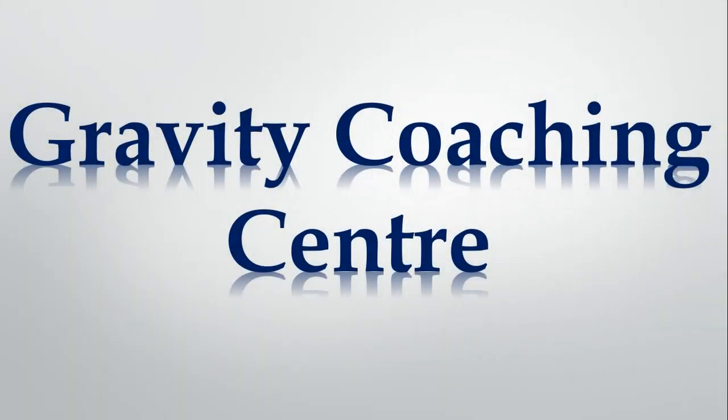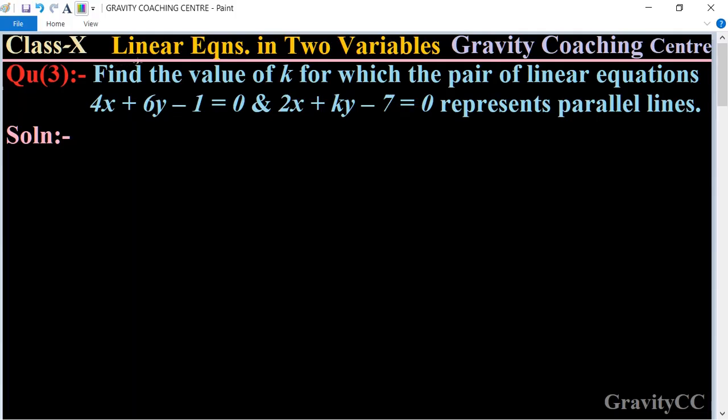Welcome to our channel Gravity Coaching Center, Class 10, Chapter Linear Equations in Two Variables, Question Number 3. Find the value of k for which the pair of linear equations 4x+6y-1=0 and 2x+ky-7=0 represent parallel lines.